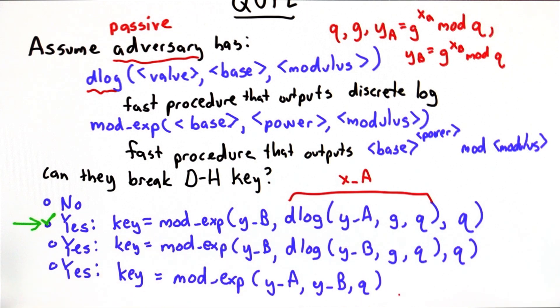The third value doesn't use discrete log. If we could actually compute the key this way, well then the protocol would be completely insecure, because it turns out that modular exponentiation is a function that we can compute efficiently.